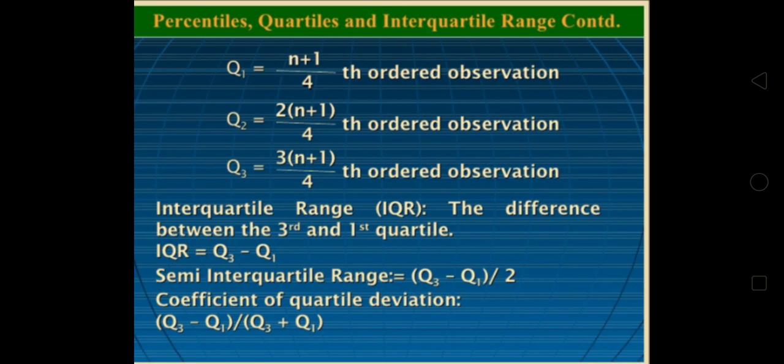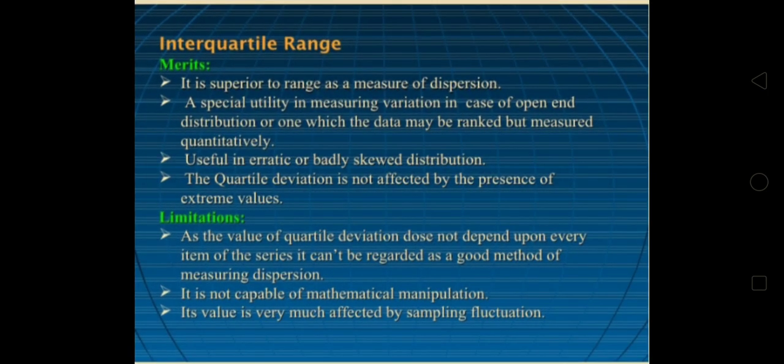Interquartile range merits: firstly, it is superior to range as a measure of dispersion. It has special utility in measuring variation in case of open-end distribution or any in which the data may be ranked but measured quantitatively. Useful in erratic or badly skewed distribution.